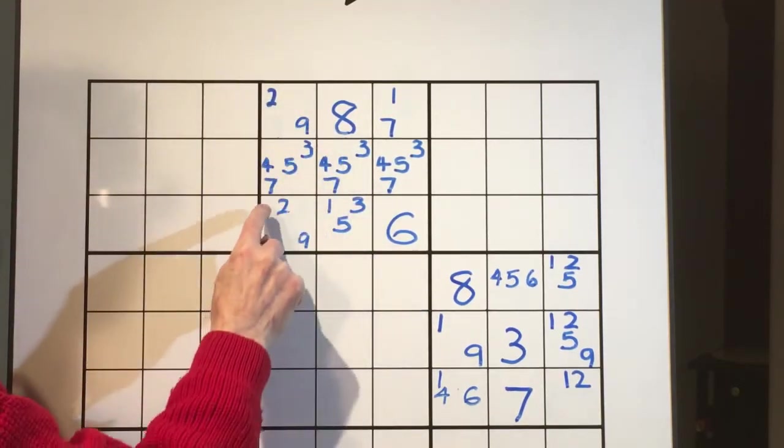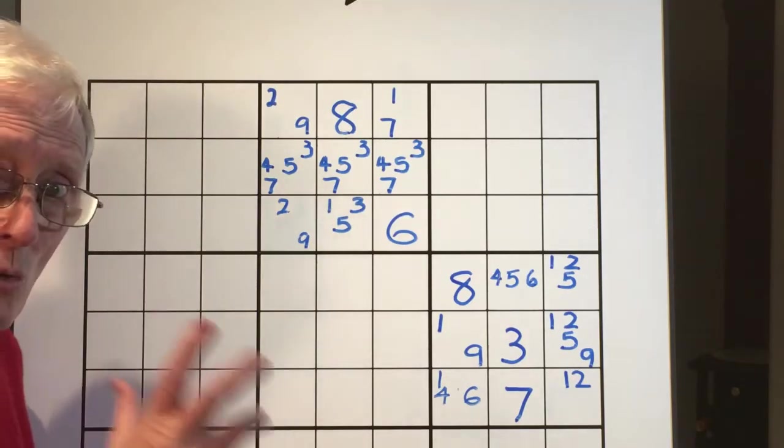Now you're left with a two, nine, two, nine matching pair. See how it works?